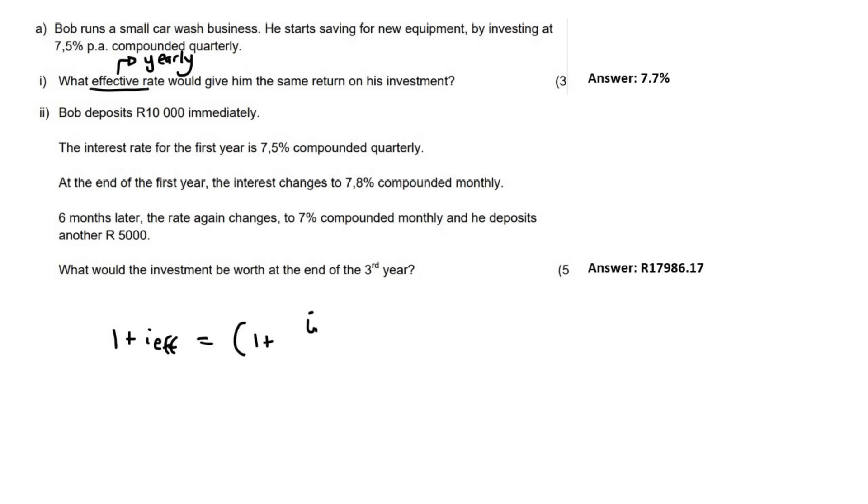Equals to one plus—now your teacher might write this a little bit different. They might use a different letter, for example. But in a nutshell, this one over here is the effective. And then this one here is what we call the nominal, and that can be things like monthly, quarterly, and things like that.